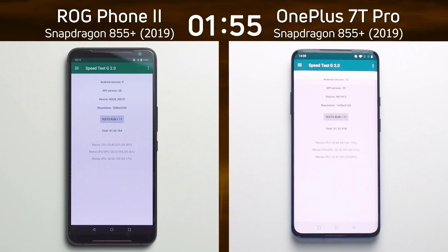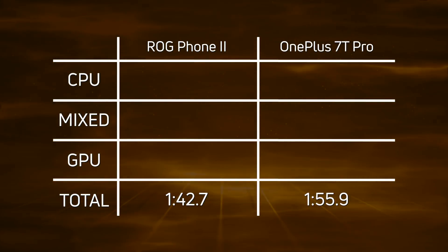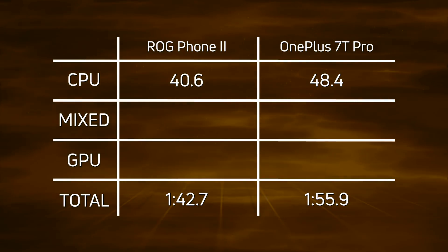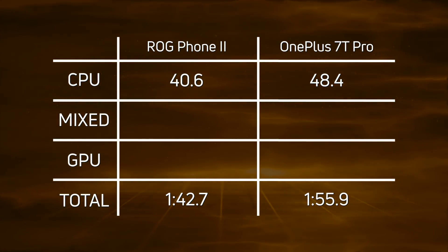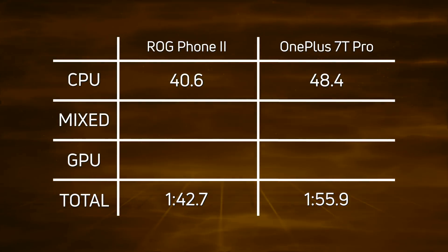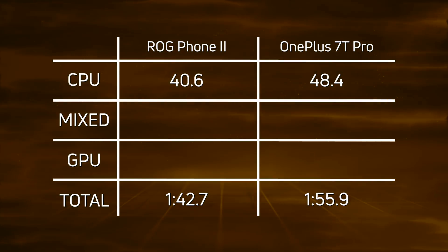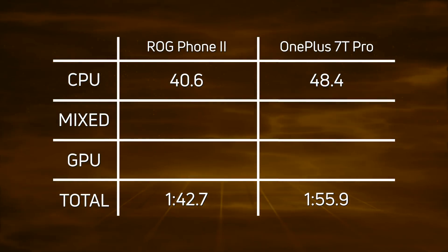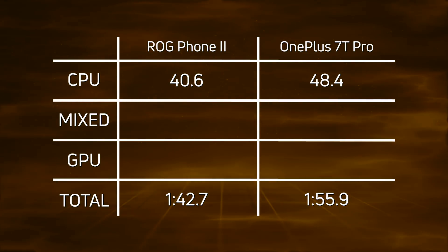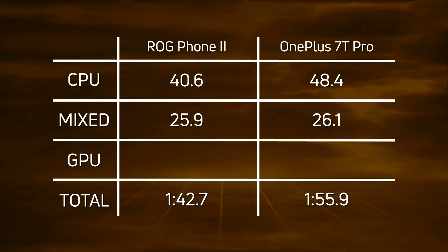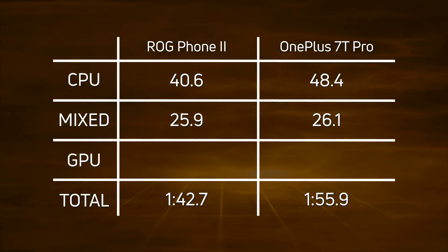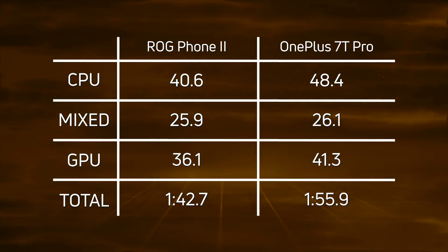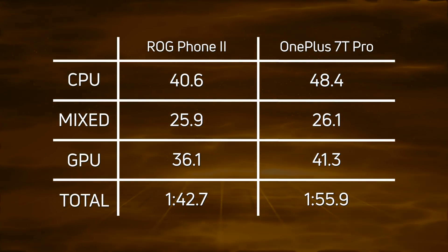Let's break down the times and see exactly what happened. The Asus ROG Phone 2 clearly won: 1 minute 42.7. In the CPU time: 40.6 versus 48.4. I went back and looked over the footage again because that's quite a difference for two devices with exactly the same SoC — the Snapdragon 855 Plus — and the Asus phone had a really blisteringly fast SQLite test. You may want to rewind the video and have a look at that. That really brought a significant lead for the Asus: 40.6 versus 48.4. In the mixed CPU/GPU it's still a win by the Asus: 25.9 versus 26.1 — only a fraction of a second, but still a win. And in the GPU we also see a difference between Full HD and Quad HD: 36.1 versus 41.3.